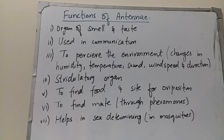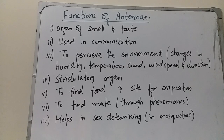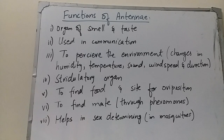Fifth, antennae are used to find suitable food or assess food quality, and also used as a site for oviposition — female insects use antennae to locate a suitable substrate to lay eggs. Sixth, antennae are used to find a mate through pheromone detection. Finally, antennae help in sex determination — for example, in mosquitoes, the male has plumose antennae while the female has pilose antennae, making it easy to distinguish between male and female.